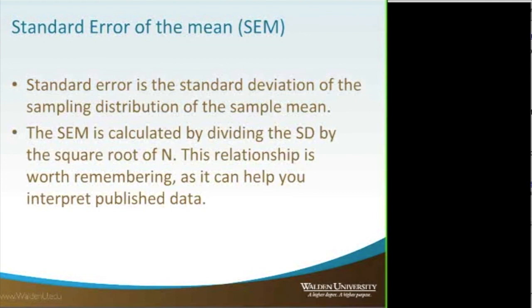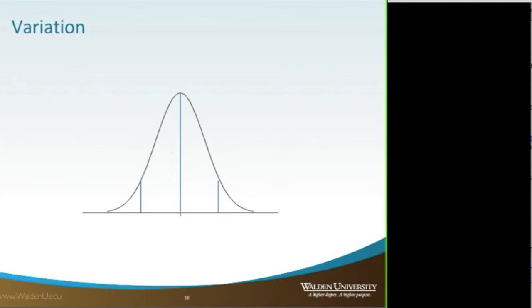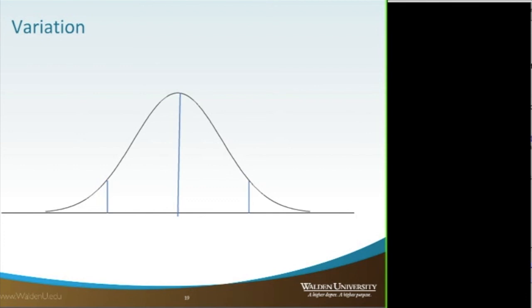Every time you do it, there's going to be some variability. Depending on the type of data, you may have more or less variability. You can correct for this with large numbers — the greater the number, we have the central limit theorem: the more data you add to your sample, the more it's going to regress towards the mean. Here we have two different data sets with the same mean but greater variability in one of them.